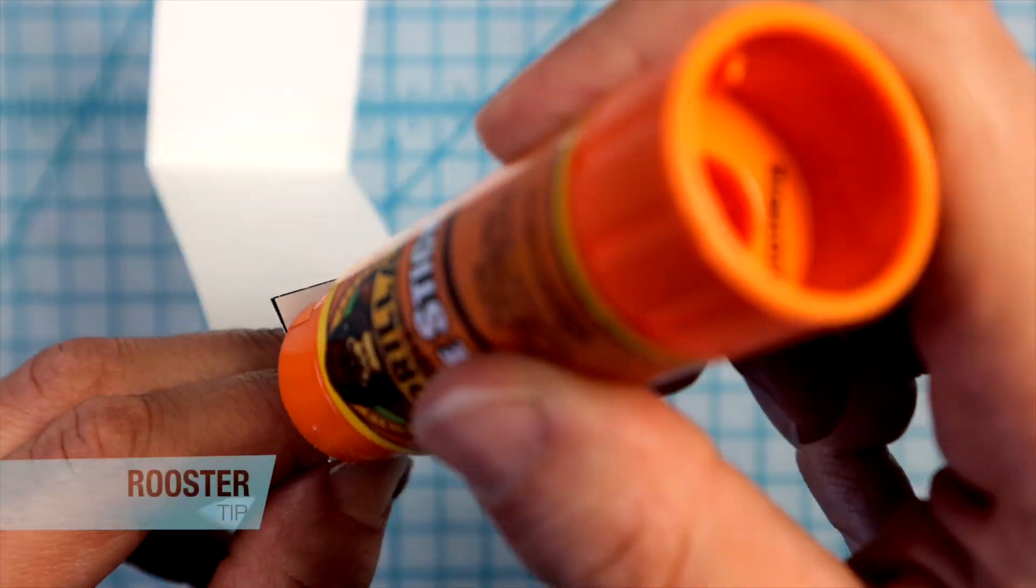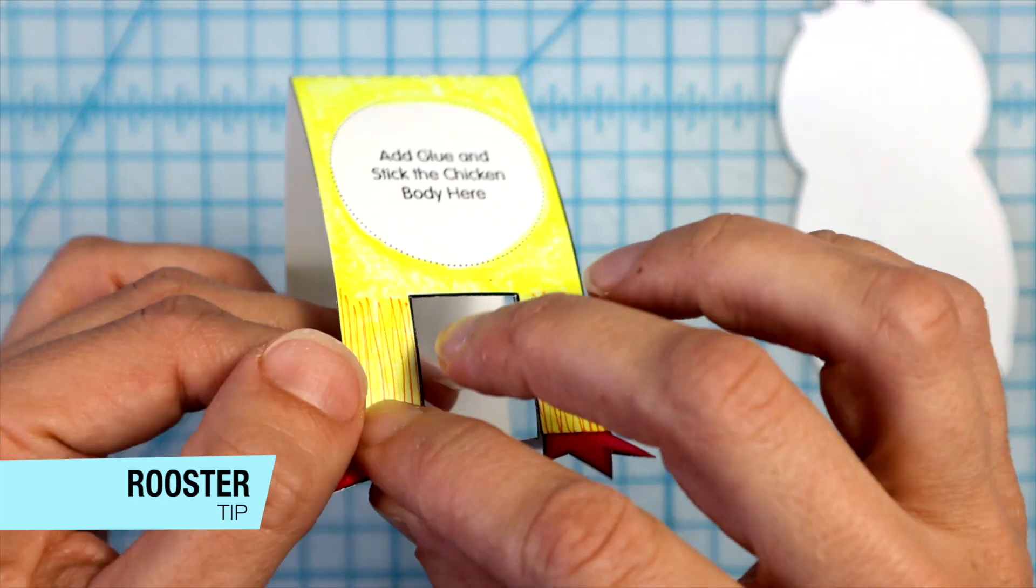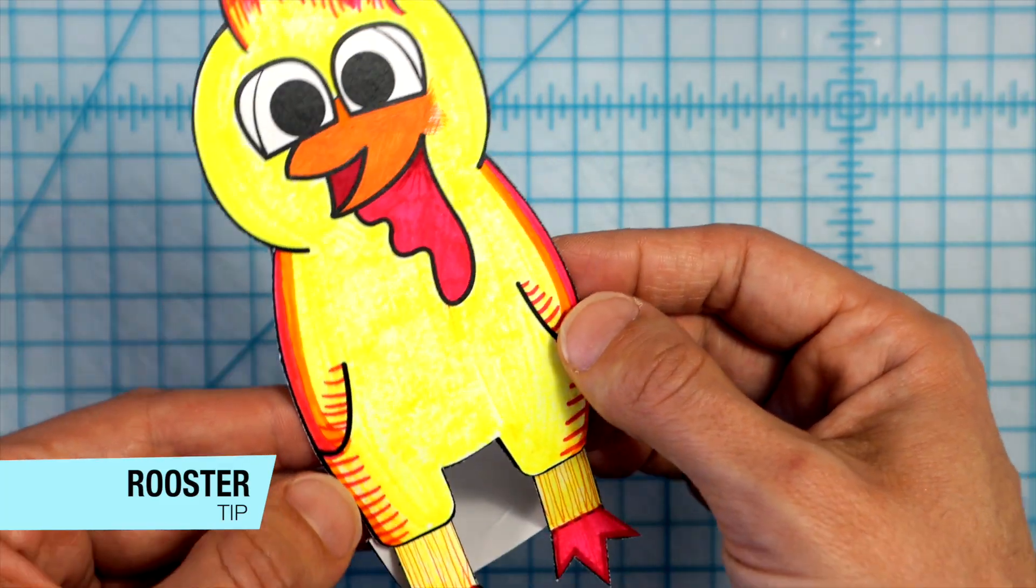For the rooster, add glue here and then adhere it to the back of the legs. Then add glue here and stick the body in place.